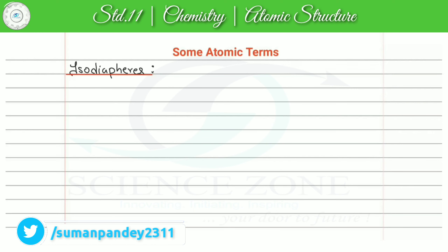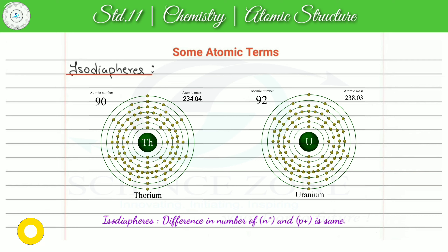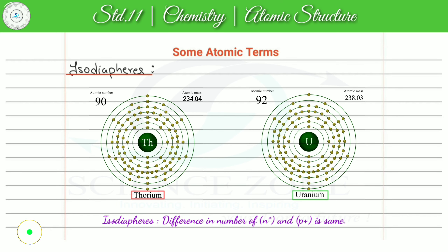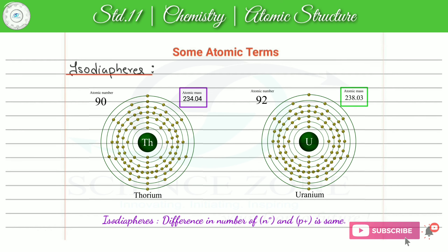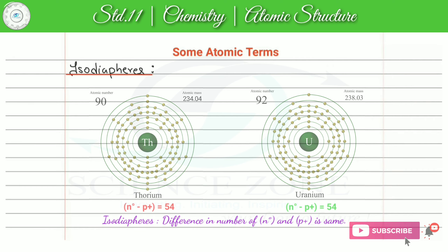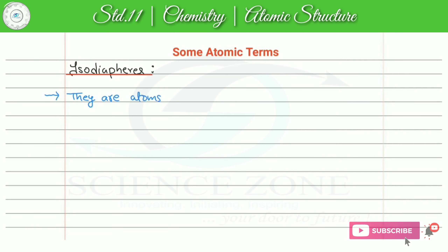Isodiaphers are atoms of different elements having same difference in number of neutrons and protons. Isodiaphers जो हैं यह different elements के atoms हैं, इनका atomic number different होगा, atomic mass different होगा, physical property different होगी, chemical property different होगा, लेकिन इनका difference जो होगा neutron and proton का, that will be same.